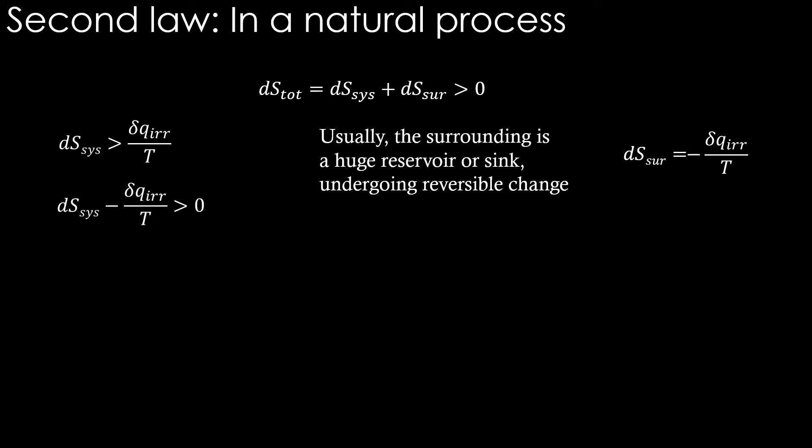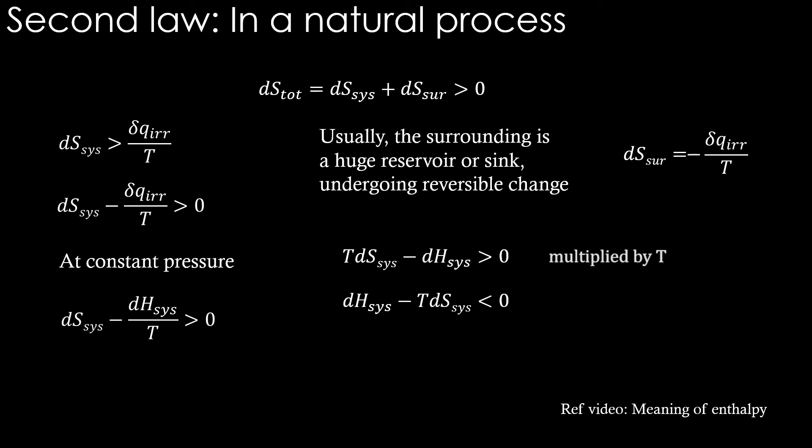dS_system minus del q_irreversible divided by T is greater than zero. We have derived in the video on enthalpy that at constant pressure del q is the enthalpy change. Therefore, at constant pressure, we can write dS_system minus dH_system divided by T is greater than zero. We get TdS_system minus dH_system is greater than zero. Or we can write dH_system minus TdS_system is less than zero.